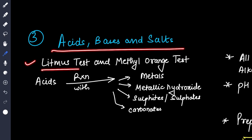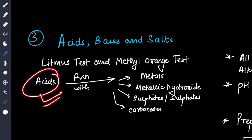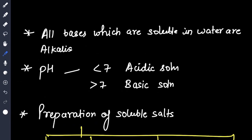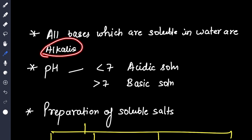Then acids, bases and salt. They may ask you the litmus test, methyl orange test, what is the color of litmus when dipped in acid. Then acids reaction with metals, metallic hydroxide, sulfites or sulfates, carbonates.